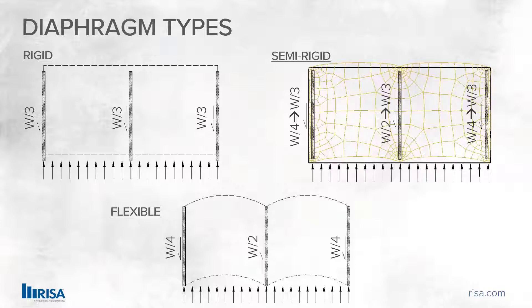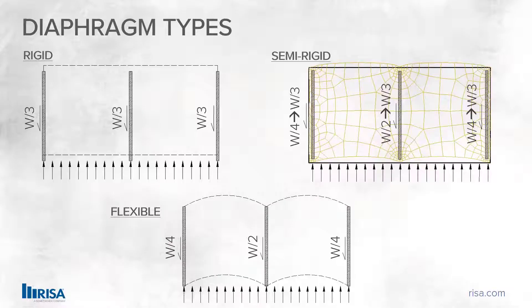The way that these diaphragms distribute load obviously varies based on the type of distribution that you choose. A rigid diaphragm means everything on that level is rigidly attached to the diaphragm itself, so there's no distribution of axial forces between points in the diaphragm. When we apply load to that diaphragm, we apply a point load to the center of the diaphragm, and then that gets distributed out and around.